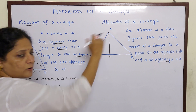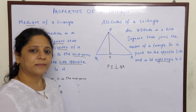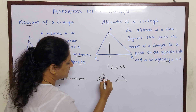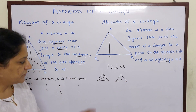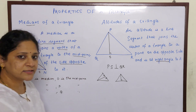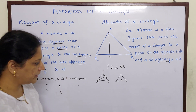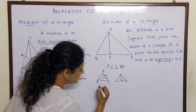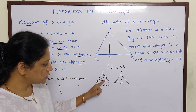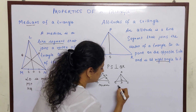That means it forms 90 degrees here. So the difference between median and altitude is: in a median, the line joins the vertex to the midpoint and the two halves are equal — shown by the equal marks. PS is perpendicular to QR — they form 90 degrees. In the altitude, there is no midpoint sign, but there is a 90-degree sign showing it is perpendicular. So that is a diagram of altitude.